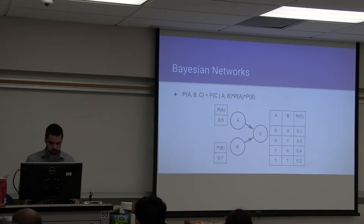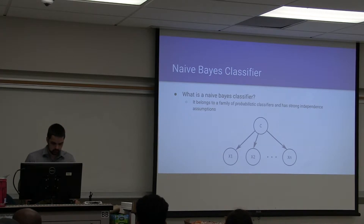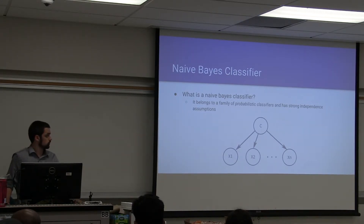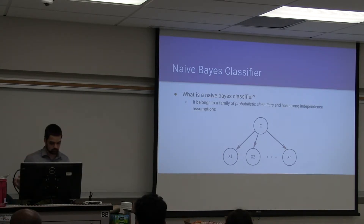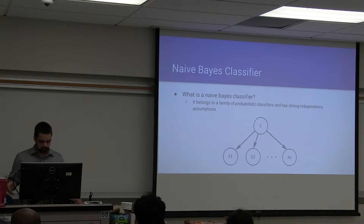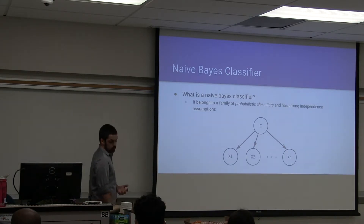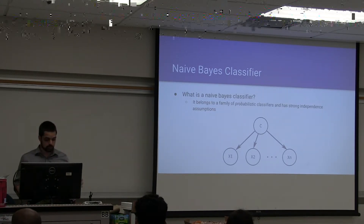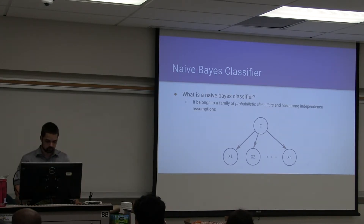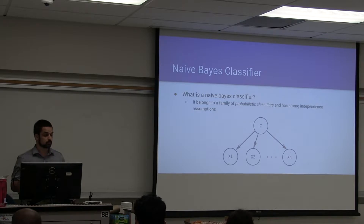Given our understanding of uncertainty and this knowledge of Bayesian networks, we can now begin to move on to a specific model called the Naive Bayes model. A Naive Bayes classifier belongs to a family of probabilistic classifiers and has very strong independence assumptions — it's actually these strong assumptions that make this classifier quote-unquote naive. It makes the assumption that all features are conditionally independent from each other, when in reality that may not be totally true. Bayesian networks tend to make assumptions about variable independence, but the Naive Bayes classifier has some notably stronger assumptions.